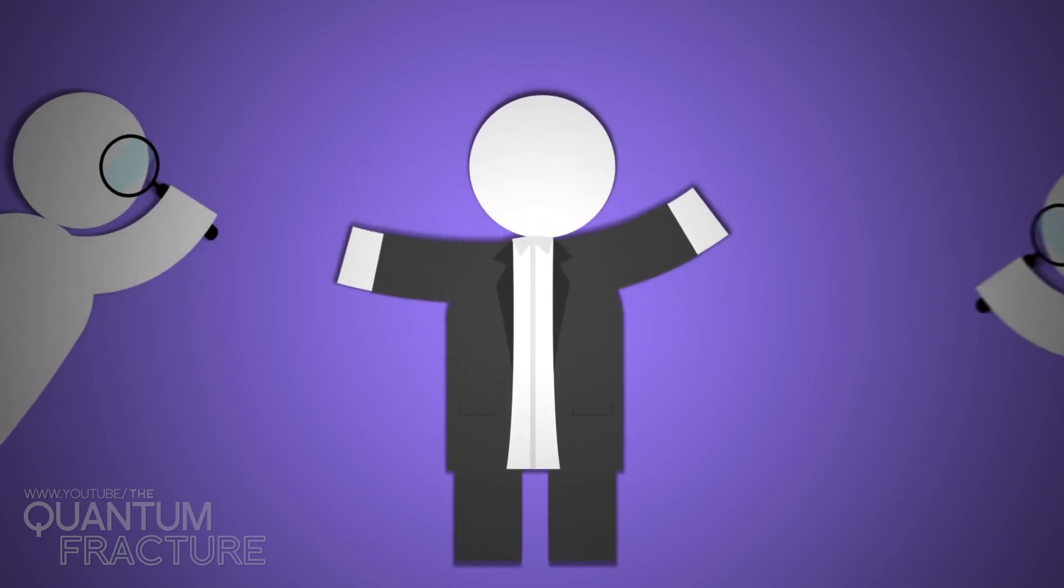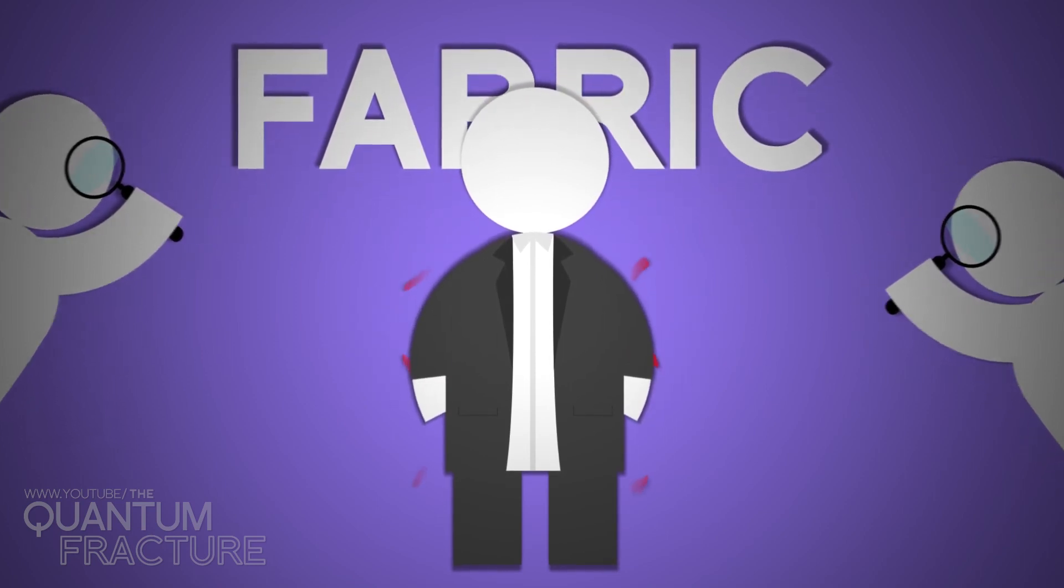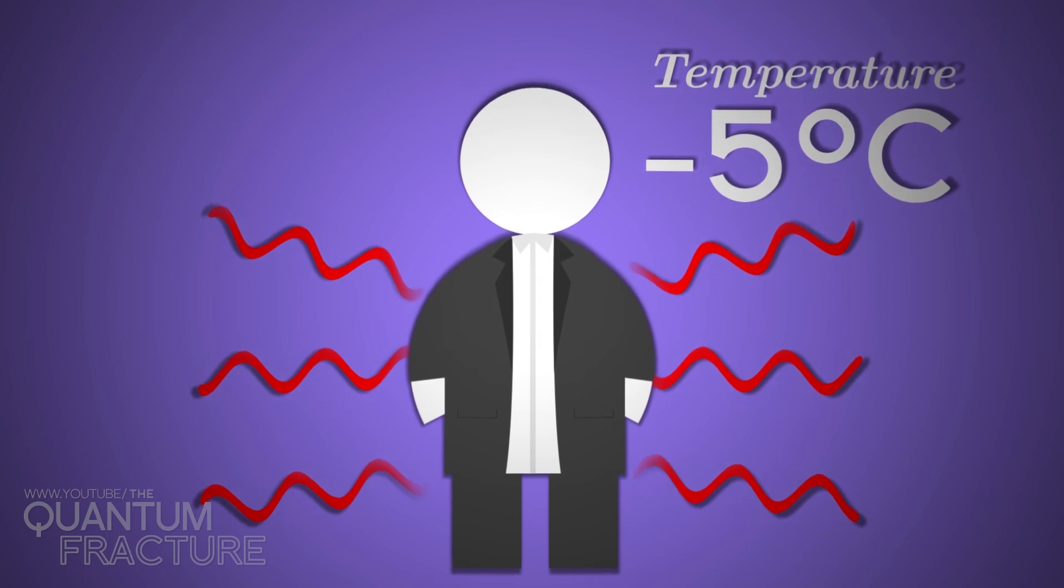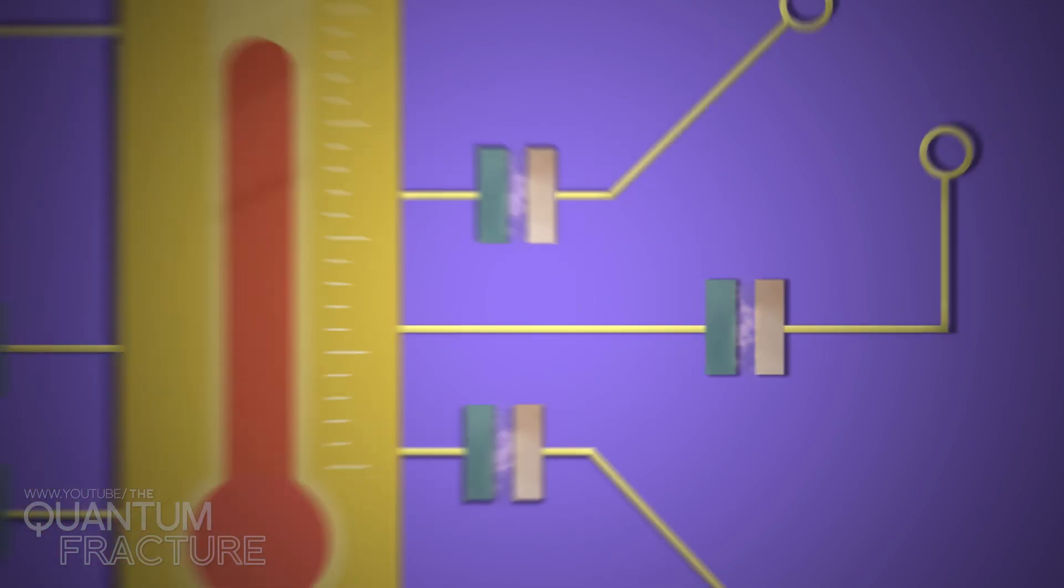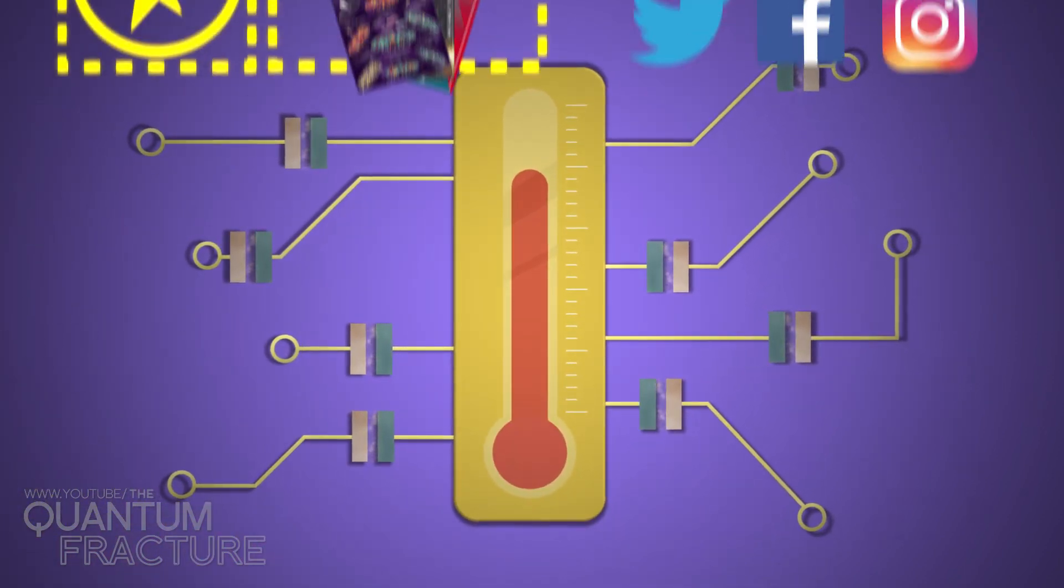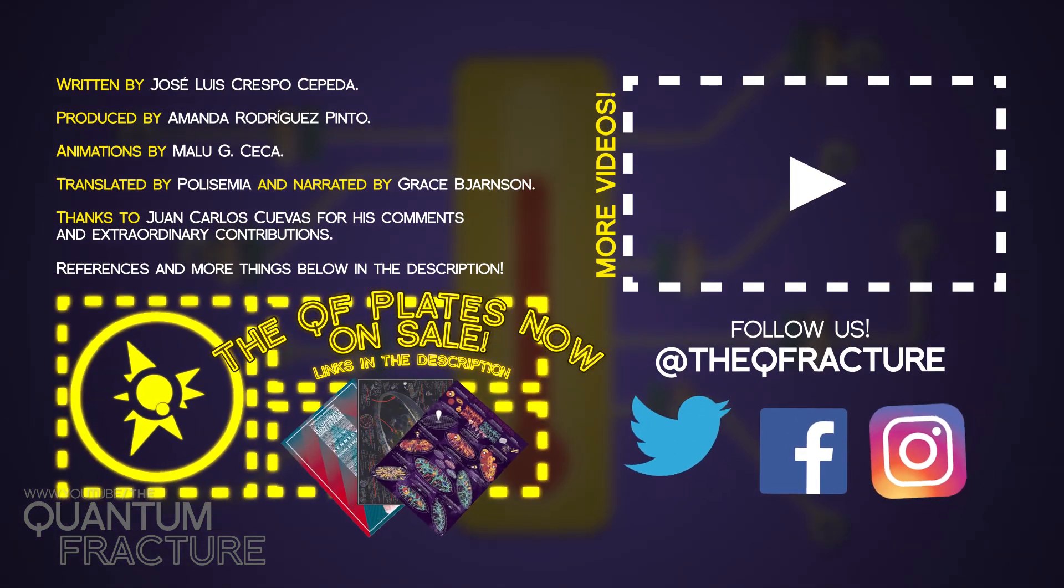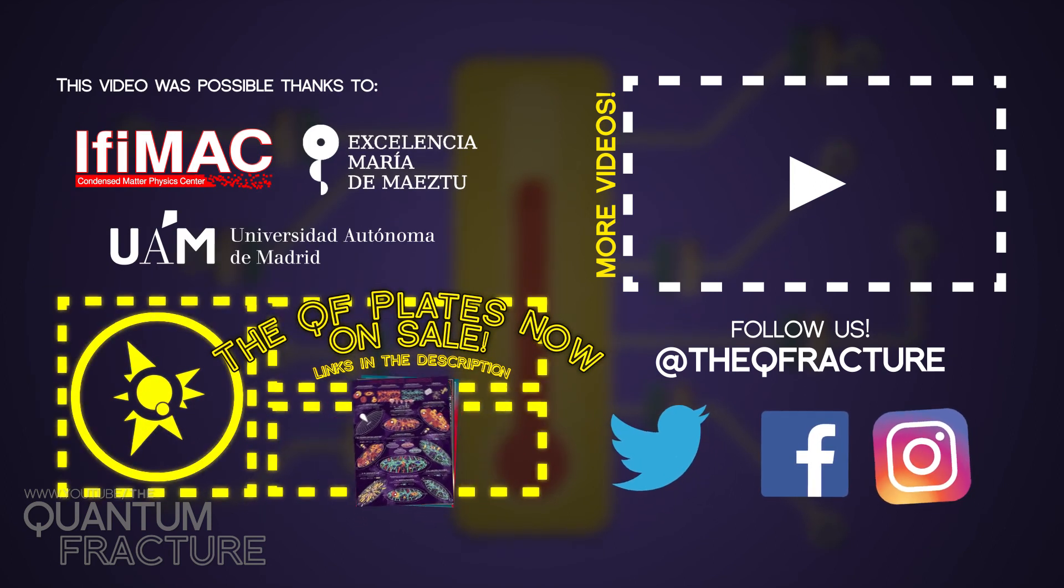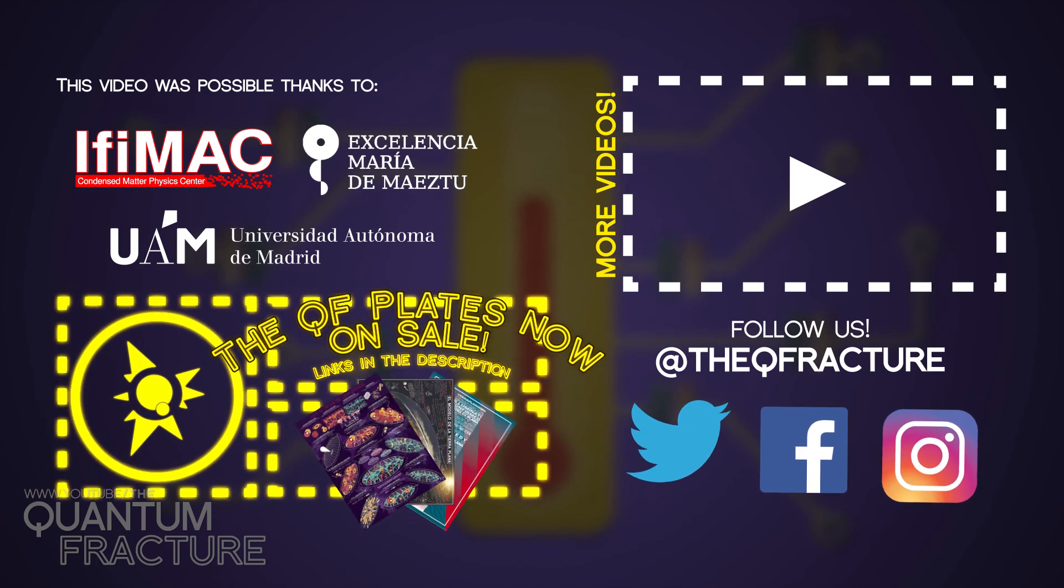Speaking of which, researchers like the pros at IFIMAC are studying the potential applications of Planck's now flexible law with things like infrared transparent visible opaque fabric, which could be used to make ultra-cool garments, or fine-tuning those heat transfers to create circuits, logic gates, and even memories using only heat flux. No one knows where all these crazy ideas will lead, but I can guarantee you'll see them here on Quantum Fracture. And remember, if you want more science, just hit the subscribe button. Thanks for watching.